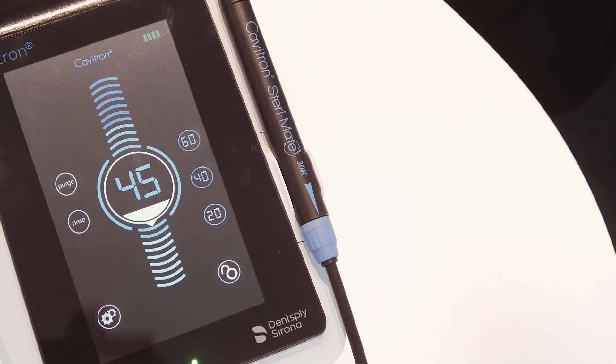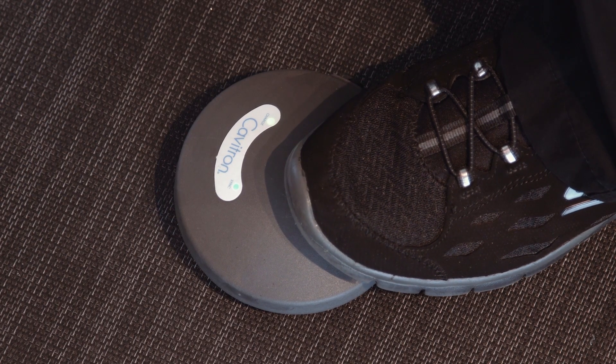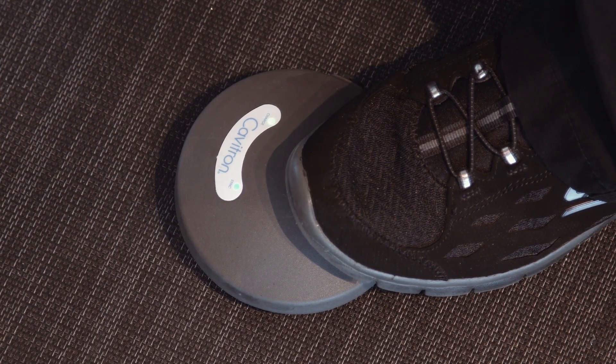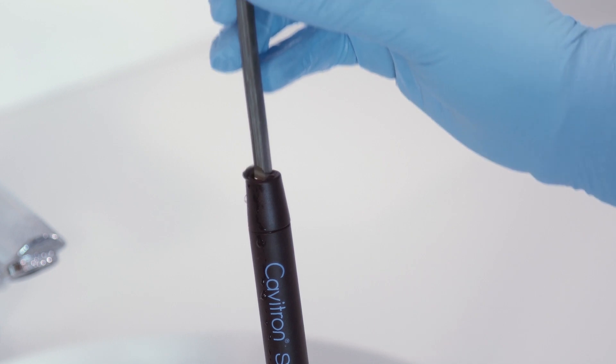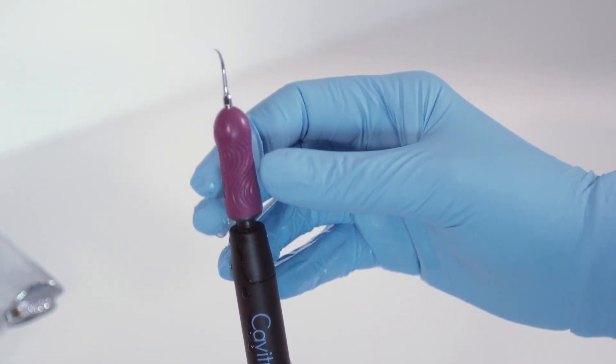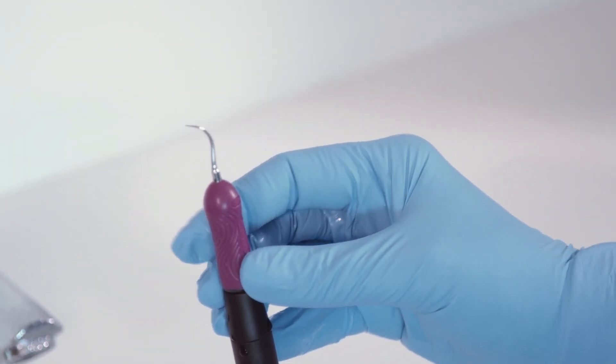Once the cord and handpiece are connected, depress the foot pedal until water exits to release any air bubbles that might be trapped inside the handpiece. In order to fully seat the insert, push with a gentle twisting motion. Do not force it.